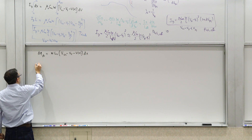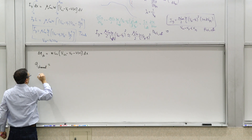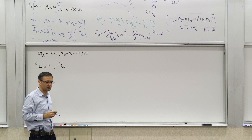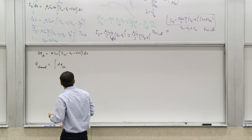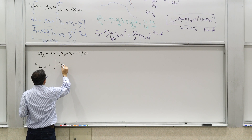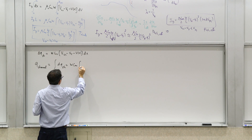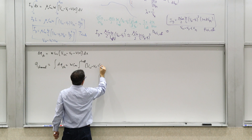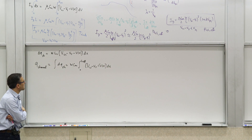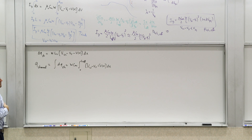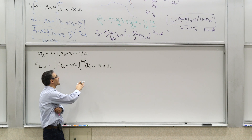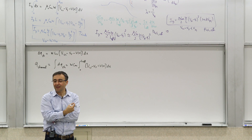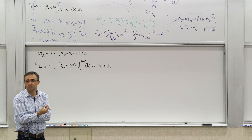With that assumption, if I want to know the total channel charge Q_channel, it's the integral of dq across the channel from one end to the other: W·Cox·∫₀^{Leff} (Vgs − Vt − V(x)) dx. To evaluate this integral over dx, I need to know V(x), the voltage profile across the channel, and we haven't assumed it's linear.